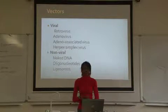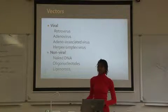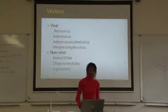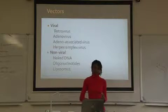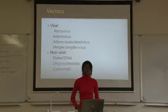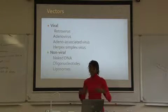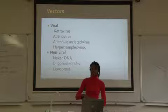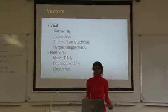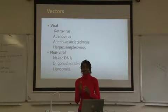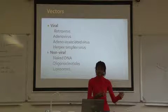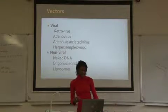You cannot just take a gene and introduce it into someone's cell — you need to use a carrier molecule to help insert the normal gene. There are two types: viral vectors and non-viral vectors. Viral vectors are mainly viruses, which have the ability to take their own genetic material and insert it into a host cell. For example, retroviruses like HIV take their genetic material, enter a host cell, and replicate using the person's DNA.